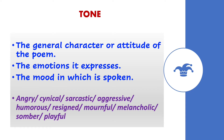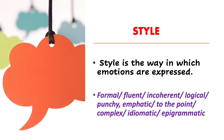Tone is the general character or attitude of the poem — what kind of emotions it expresses and the mood in which it's spoken. It can be angry, cynical, sarcastic, resigned, melancholic, etc. Style is the way in which emotions are expressed — whether in a formal way, a logical way, an incoherent way where ideas are not well organised, an epigrammatic way where ideas are briefly but quite comprehensively expressed, or if the ideas are ordered to the point.